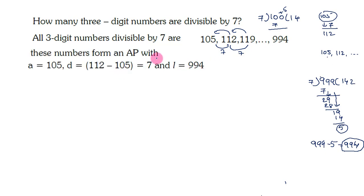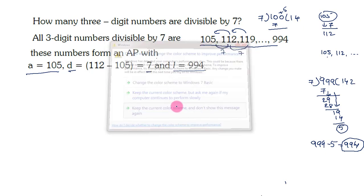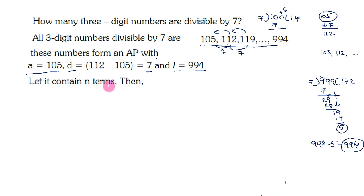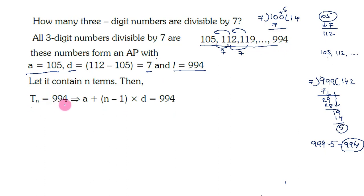These numbers form an AP where the first term A is 105, the common difference D is 7, and the last term L is 994. We need to find how many terms N are in this AP. Assuming there are N terms, the nth term equals 994. Using the nth term formula: A + (N − 1) × D = 994.